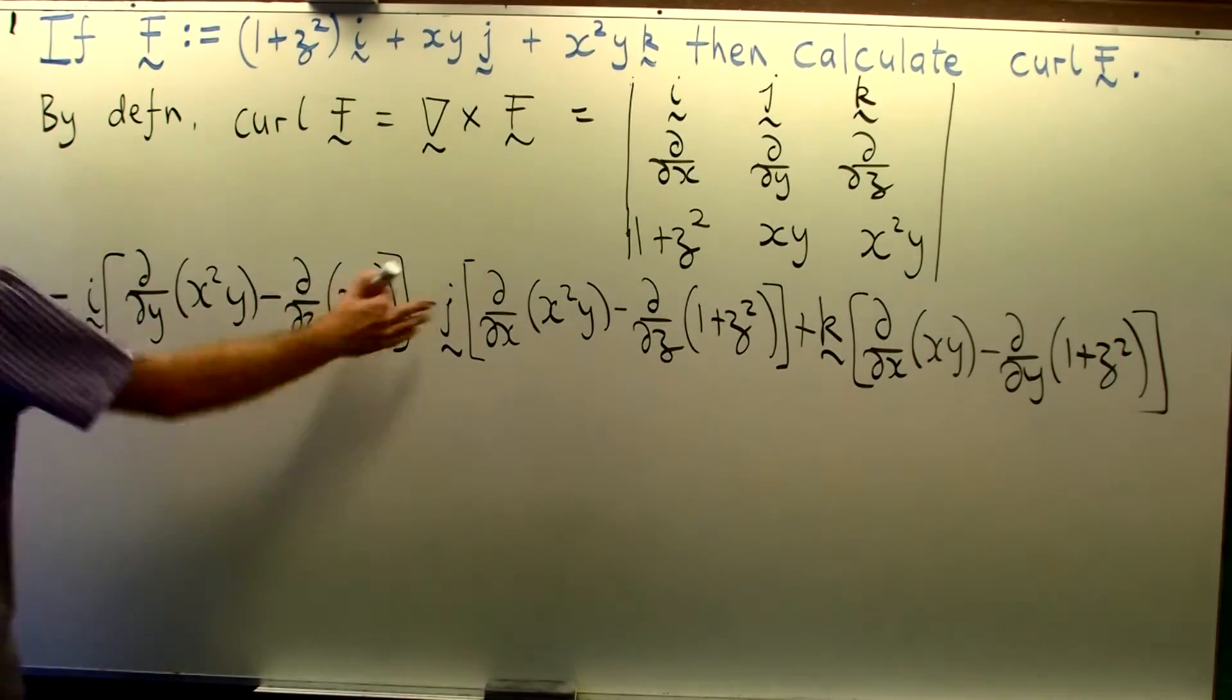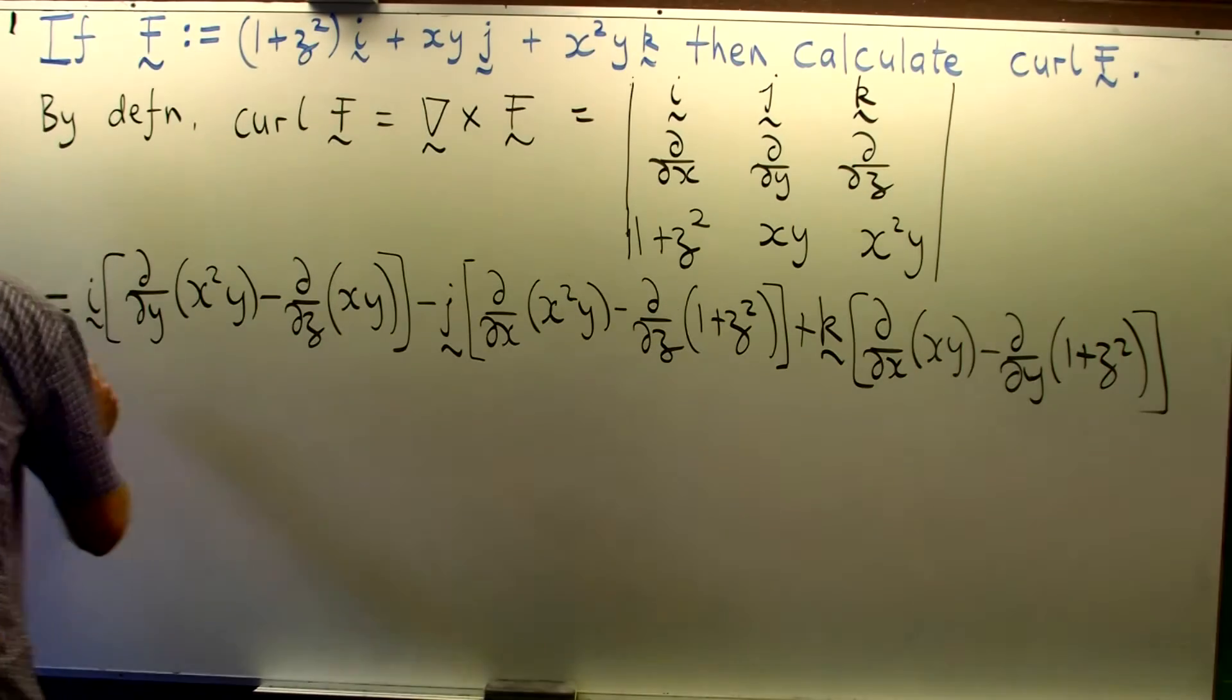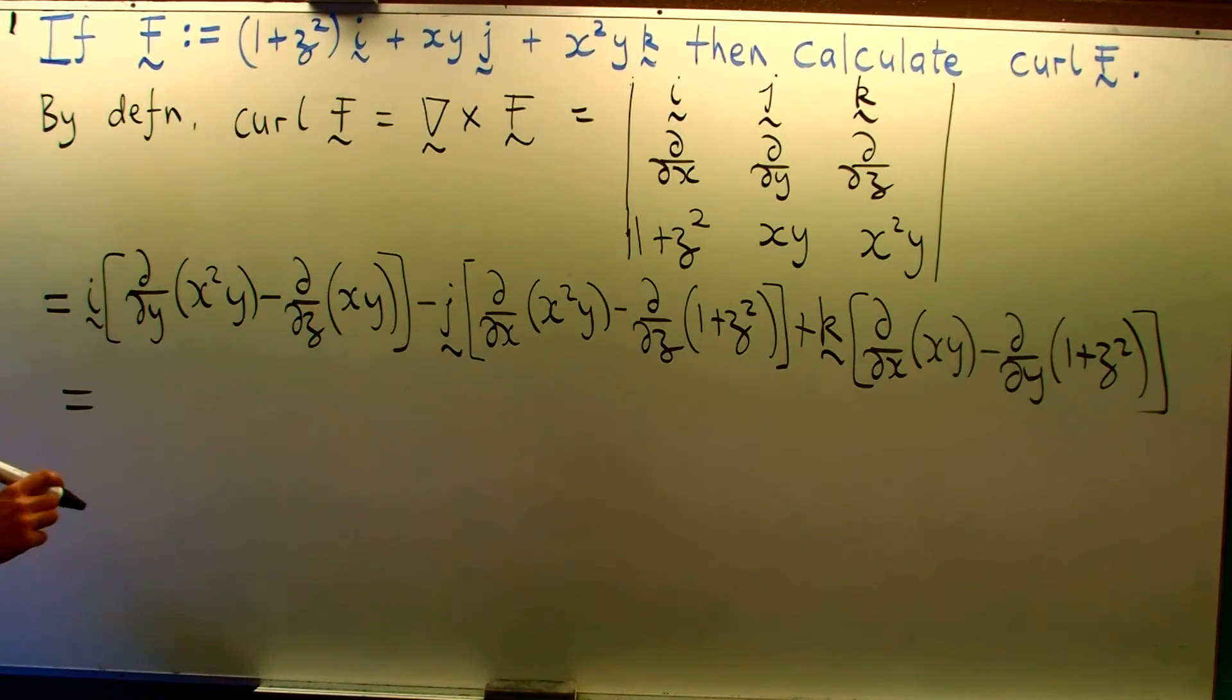Okay so now it's just a matter of cleaning up the individual bits and then writing out the final answer. So here we're going to have, this is going to go to x squared, this is going to go to 0.